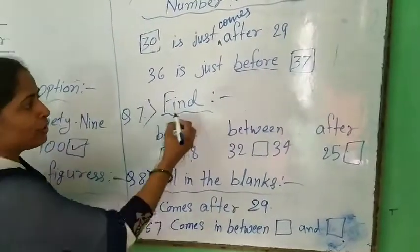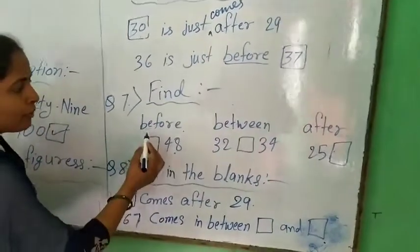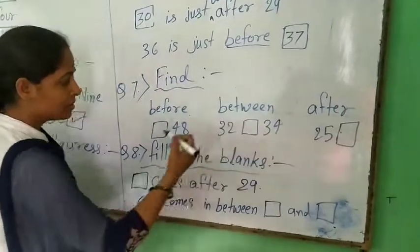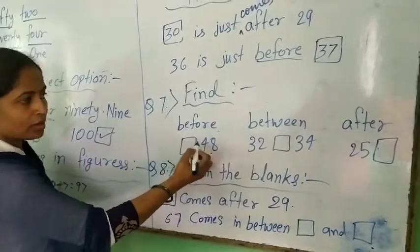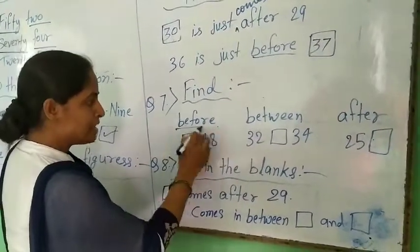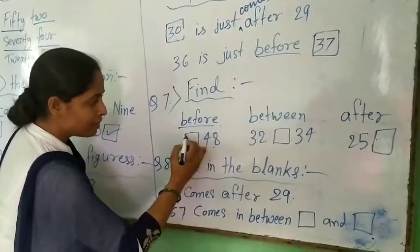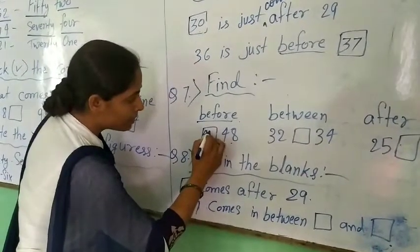Next question 5. Before, between, after. 48 before. Before means earlier. 48 before, 47.